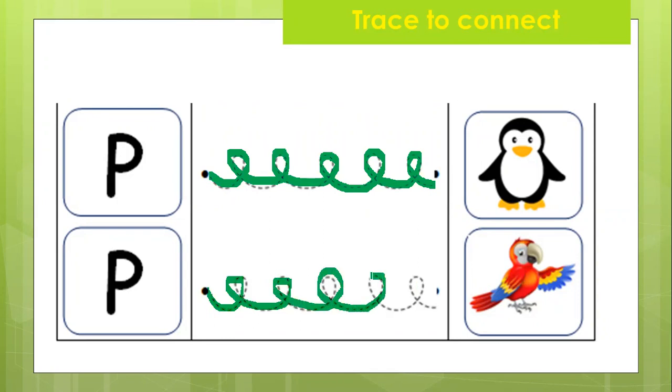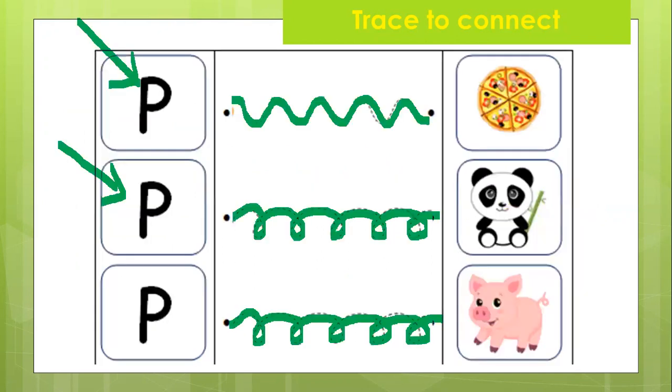All right. Trace, and trace, and trace. Yeah. So we got P for penguin, P for parrot, P for pig, P for panda, and P for pizza.